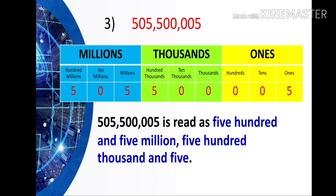Here's the third example. We have 505,500,005. Use the place value chart as your guide. 505,500,005 is read as five hundred five million, five hundred thousand, five.